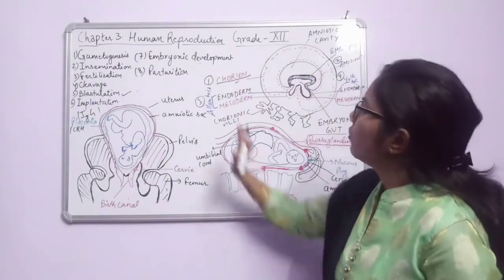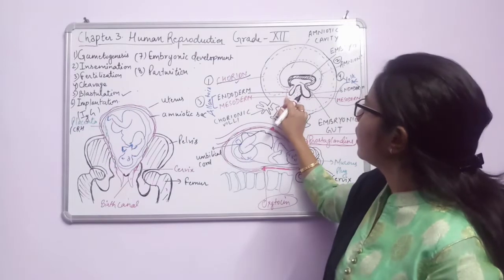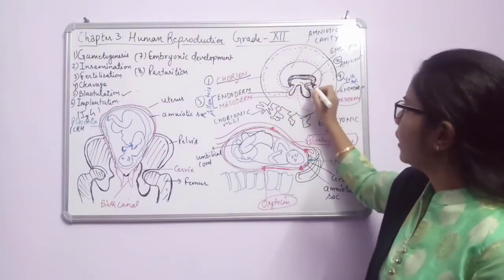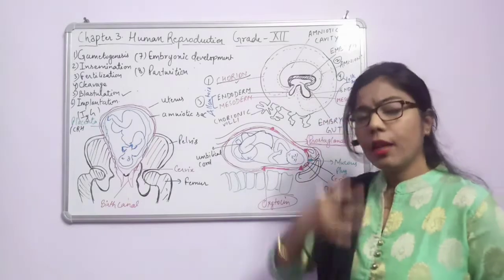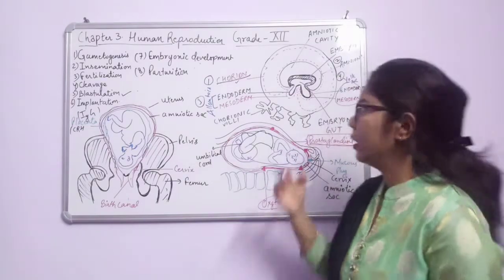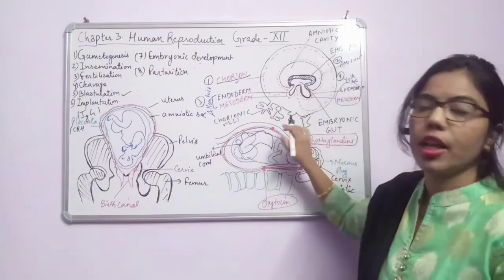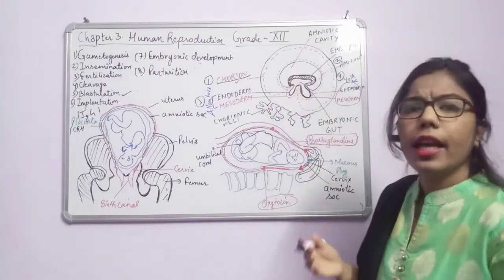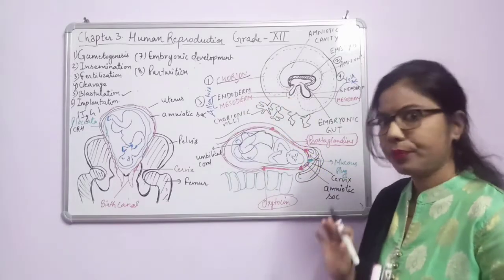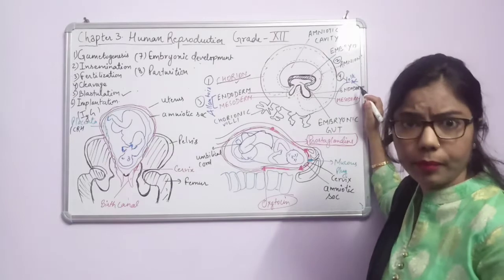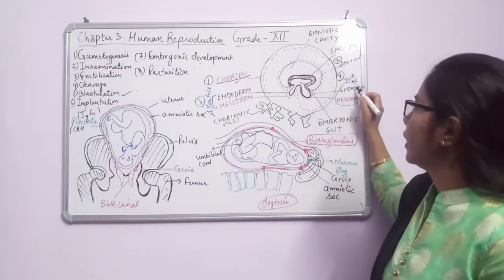Moving towards the inner part, we can see the endoderm and mesoderm. The embryo has three gut parts: foregut, midgut, and hindgut. The hindgut part of the embryo protrudes outward into the extra-embryonic cavity, forming allantois, which is covered by endoderm and mesoderm.